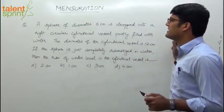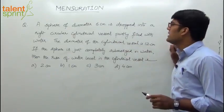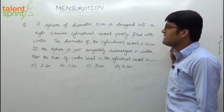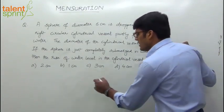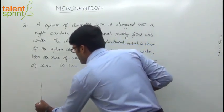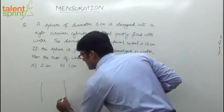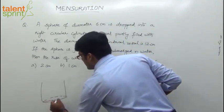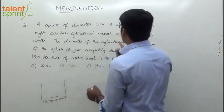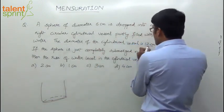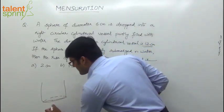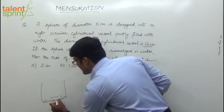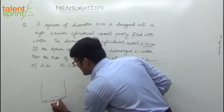The question says: a sphere of diameter 6 cm is drawn into a right circular cylindrical vessel partly filled with water. There is a cylindrical vessel, and the diameter of this vessel is 12 cm. So if the diameter is 12, we can say that the radius R is equal to 6 cm.